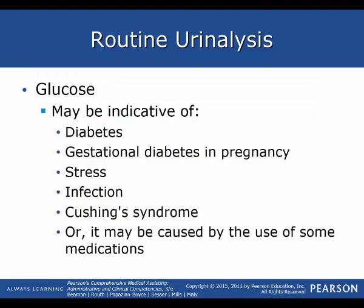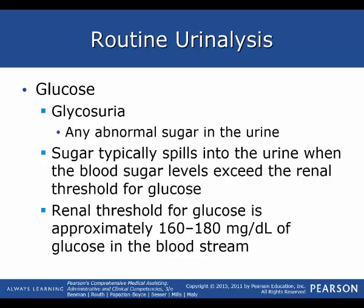Glucose may be indicative of diabetes, gestational diabetes in pregnancy, stress, infection, Cushing syndrome which has to do with your adrenal glands, or it may be caused by some medications. Glycosuria is any abnormal sugar found in the urine. Sugar typically spills into the urine when the blood sugar level exceeds the renal threshold for glucose, which is approximately 160 to 180 milligrams per deciliter of glucose in the bloodstream.